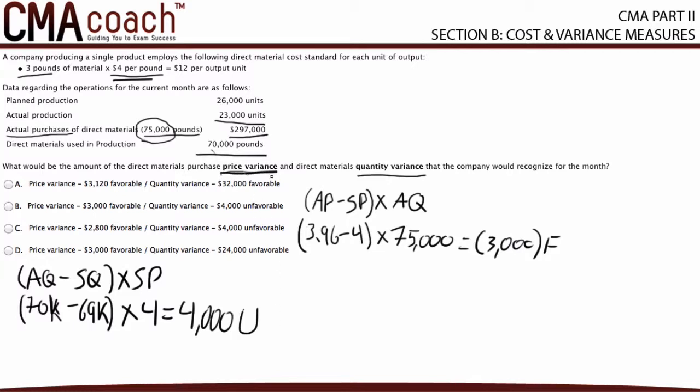When we do the math, the answer is a $4,000 unfavorable variance. With that, we've calculated both the purchase price variance and the quantity variance. That's all for this video — see you in the next one!